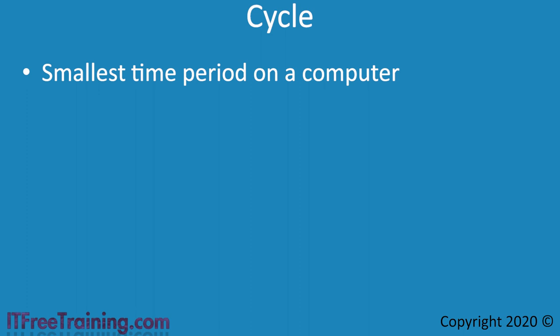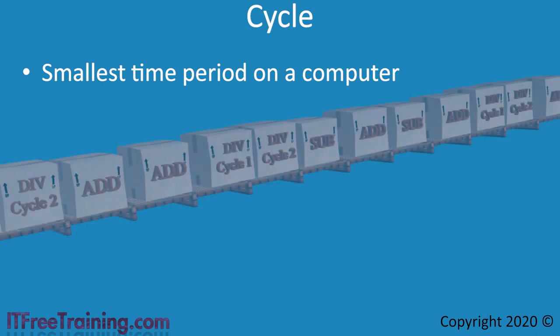To understand how it works, consider that you have a conveyor belt. On the conveyor belt are the instructions the computer will process. Some instructions take one cycle, other instructions take more than one cycle. In this example, the divide instruction takes two cycles where the add and subtract instructions take one each.